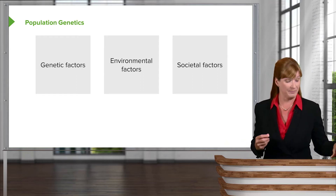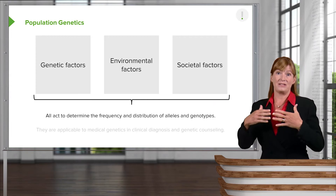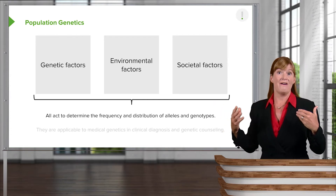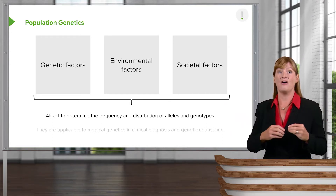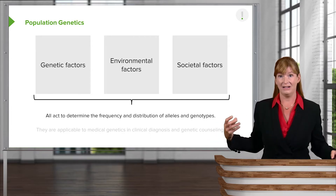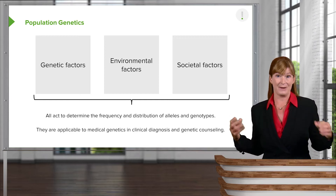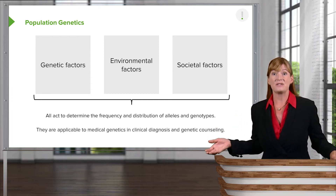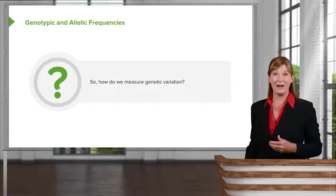We can determine the frequency as well as distribution between various populations. For example, some cultures or countries may have a higher incidence of one variant of a gene, whereas others have a lower frequency. This is applicable because we use these numbers in genetic counseling as a principle for diagnosing or predicting the possibility of various genetic outcomes.